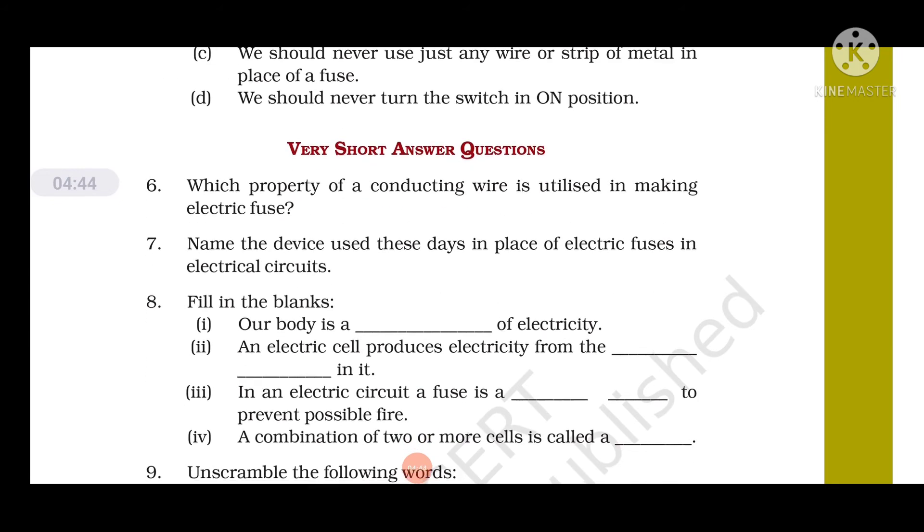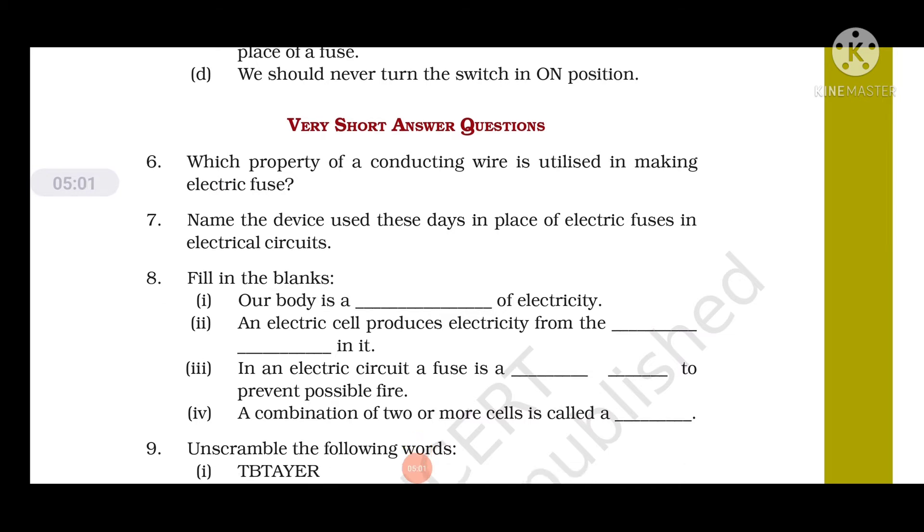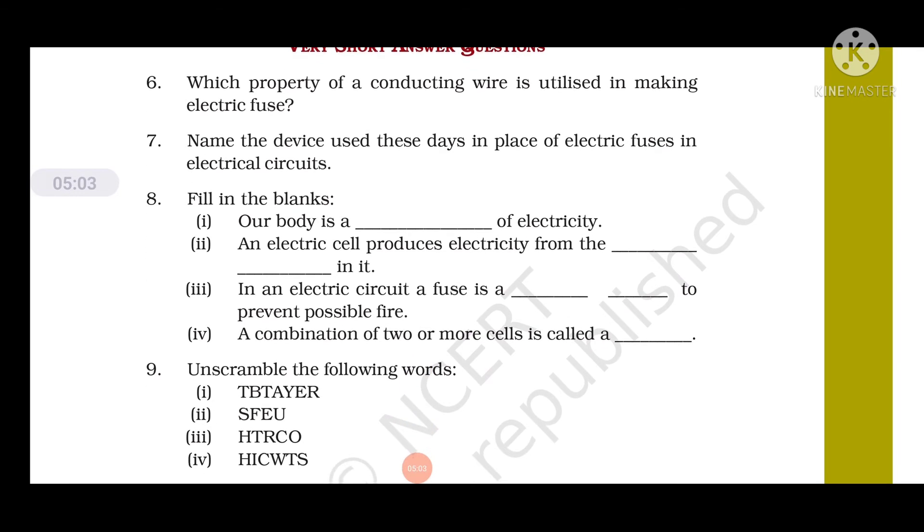Question number 6: Which property of a conducting wire is utilized in making electric fuse? Electric fuse is made of the metal which has low melting point, so low melting point of the wire is utilized in making electric fuse. Question number 7: Name the device used these days in place of electric fuses in electrical circuits. MCB is used now in place of fuse. The full form of MCB is Miniature Circuit Breaker.